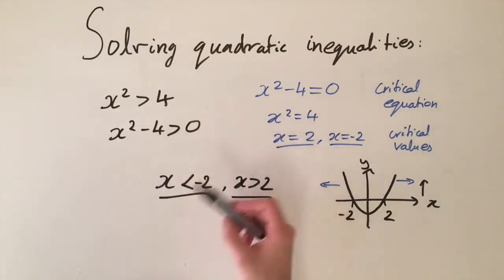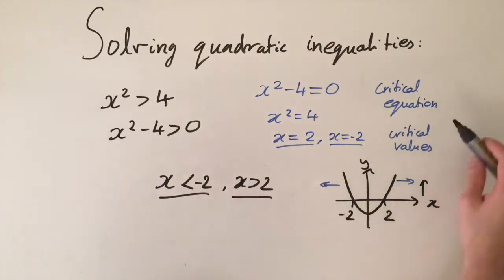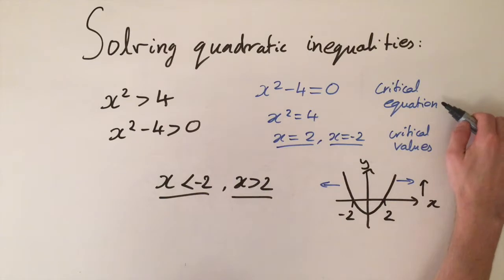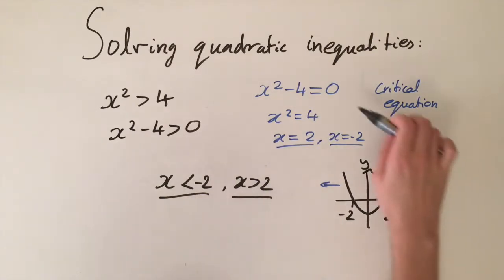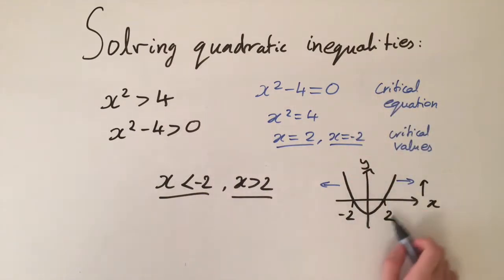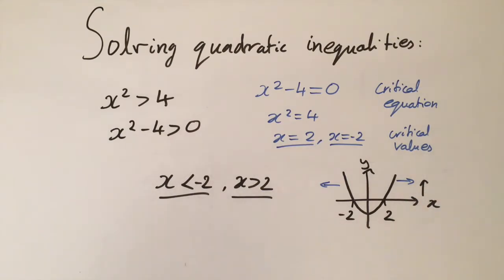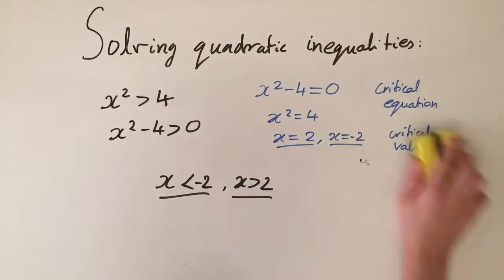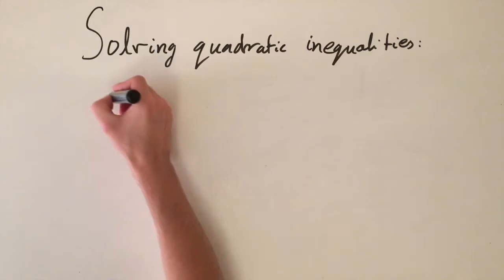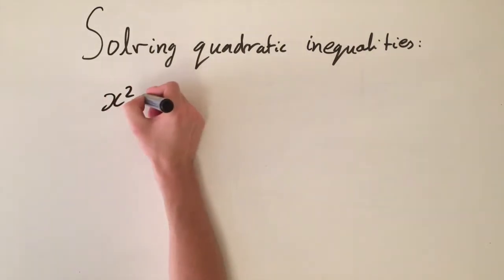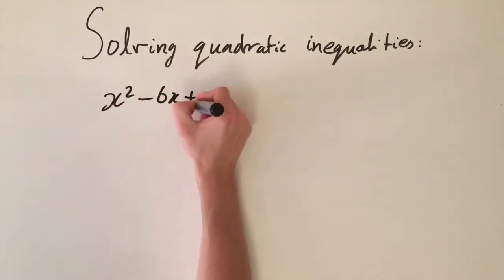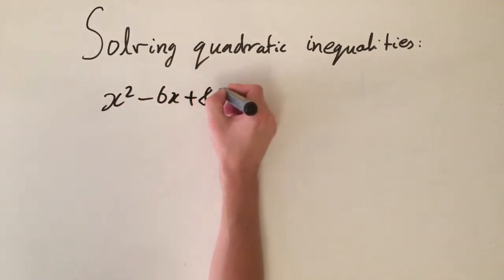So just from the graph and the critical values, we know the solutions are x is less than minus two and x is greater than two. This was a simple example showing the method: we find the critical equation, we find the critical values by solving that equation, and then we look at the graph to find the values of x such that the function is positive or negative. Now we're going to go into a few harder examples to solidify the method.